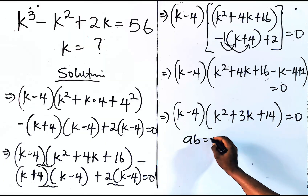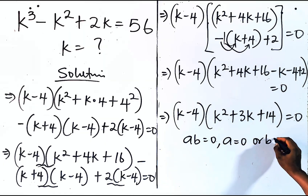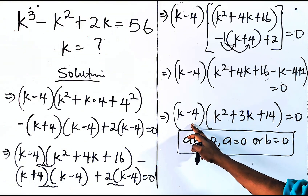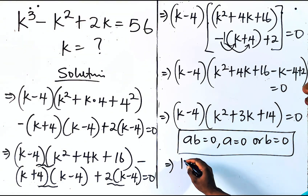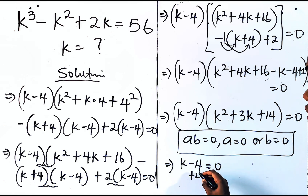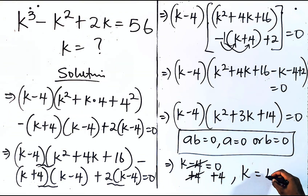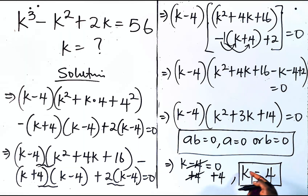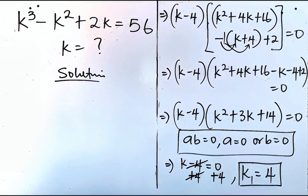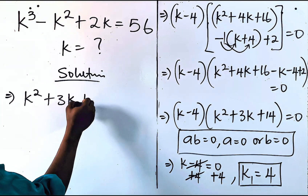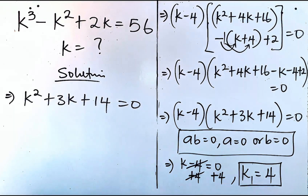Now, remember for every ab equal to 0, either a is 0 or b is 0. So either k minus 4 equals 0 — add 4 to both sides, this cancels, and we get k equals 4. This gives us the first value of k. So we now have k squared plus 3k plus 14 equals 0.